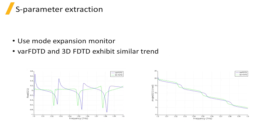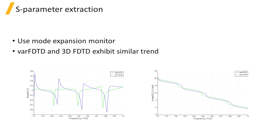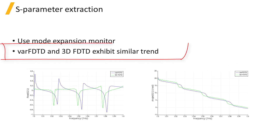We can also extract the S parameters of the ring resonator by using mode expansion monitors to get the amount of forward and backward propagating power in the fundamental TE mode at the input and output ports. We will show how to set up mode expansion monitors for this purpose in a later section of this course. The plots on the left show the real part of the S parameters using VARFDTD and 3D FDTD, and the plots on the right show the phase of the S parameters.